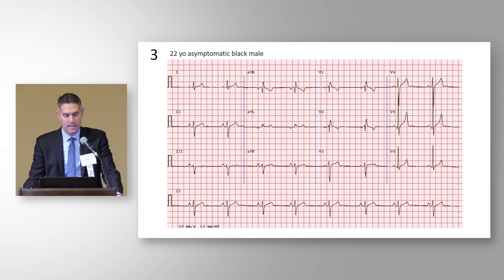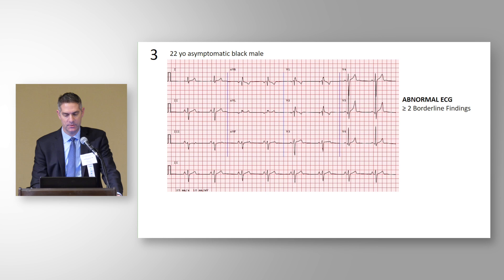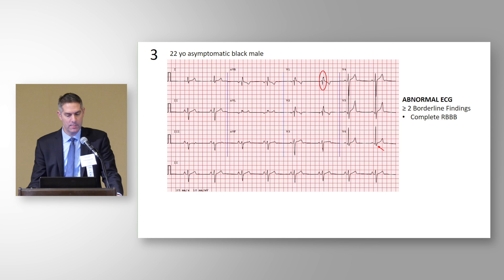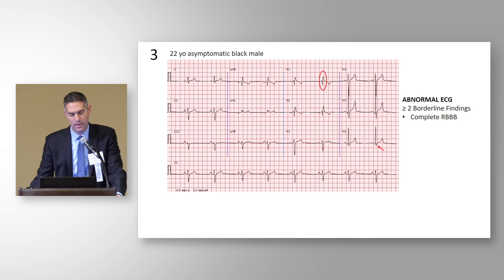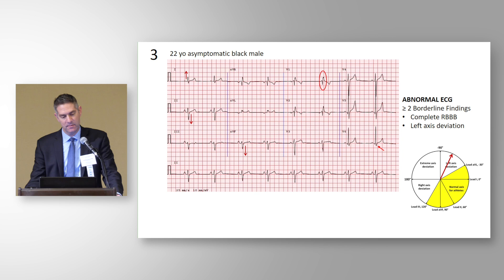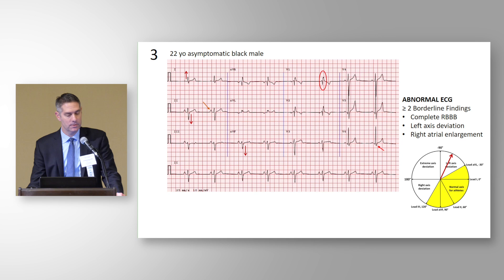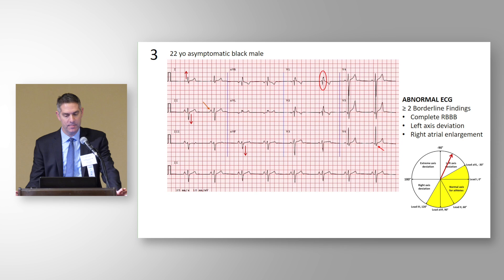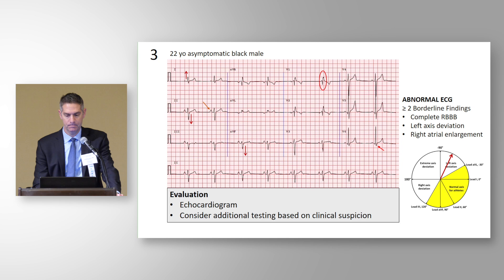ECG number three is a 22-year-old asymptomatic Black male. It's another right bundle branch block but with additional findings — multiple findings from the yellow borderline box that together trigger more investigation. We have the RR prime in V1, wide S wave in V6, and QRS wider than 120 milliseconds — that's right bundle branch block. We also have left axis deviation, with the axis beyond minus 30 degrees, and evidence of right atrial enlargement with a tall P wave in lead two greater than two and a half small boxes. Multiple borderline findings adding up make this an abnormal ECG warranting further investigation.